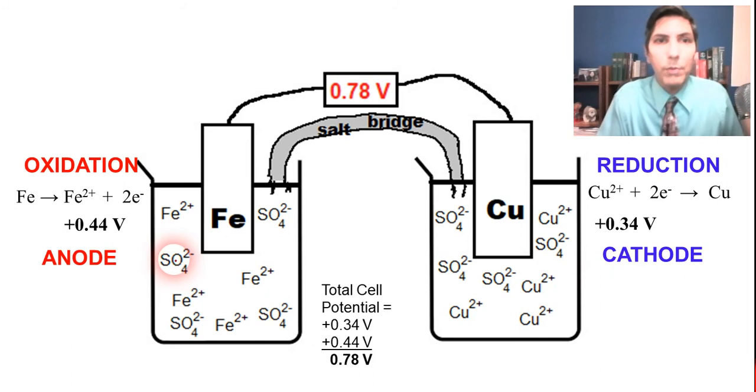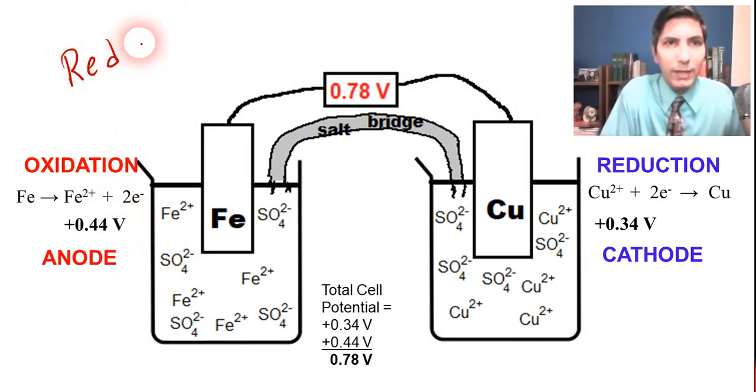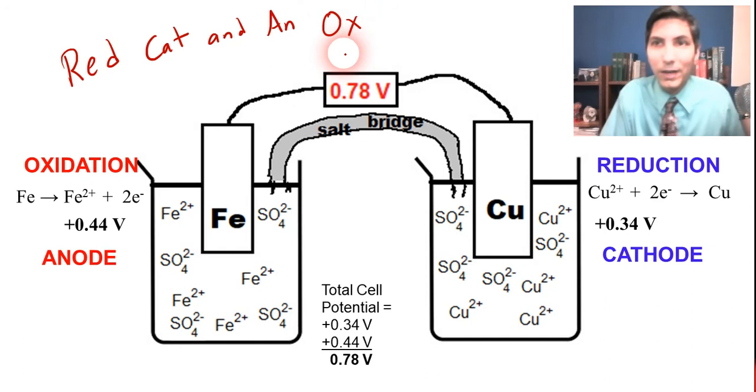And if you have trouble remembering that, there are a couple ways to remember. Sometimes we say red cat and an ox. So that's a nice little fun mnemonic aid to help us remember this. Red cat - reduction cathode, and an ox - anode oxidation.